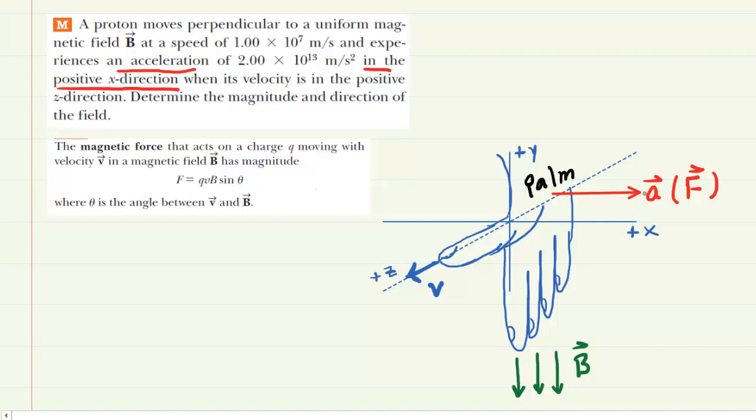Importantly, if the acceleration points along the positive x direction, then so does the magnetic force. So we've labeled the force as well, pointing to the right in the positive x direction. We were also told that the velocity is in the positive z direction. So we've drawn a blue vector labeled v, pointing along the positive z direction.